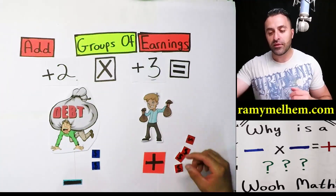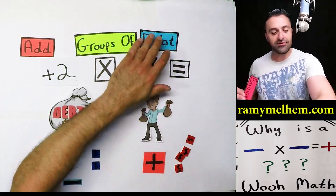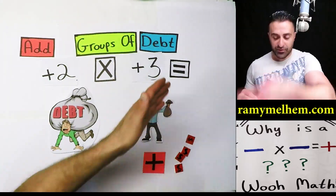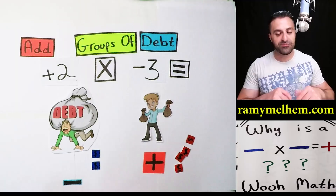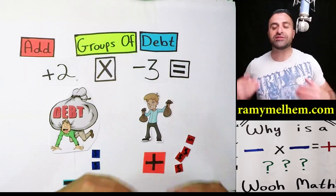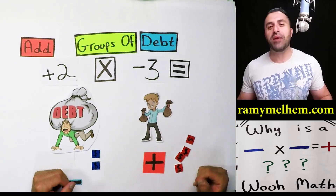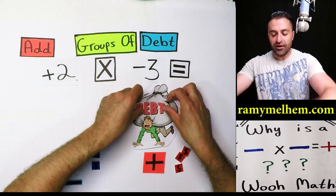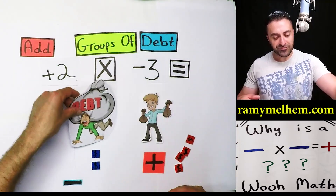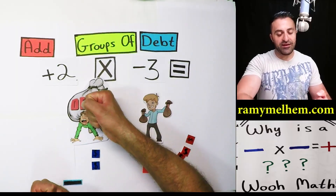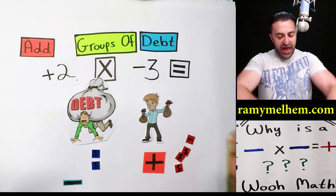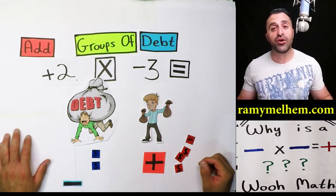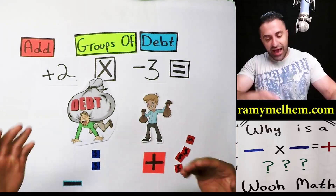Adding two groups of debt with three bucks — that means putting three dollars of debt inside each bag. You give him a bag of debt and add another bag. We're adding groups of debt. So you add debt onto him. Now he has to pay it back. That's a bad scenario — we have here adding debt.